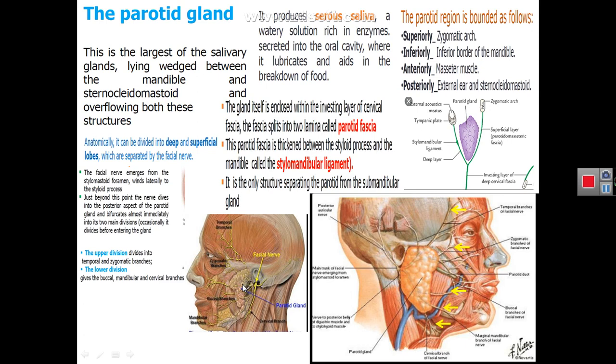Inside the substance of the parotid gland you have the facial nerve, which is the seventh cranial nerve. The facial nerve projects from the stylomastoid foramen — situated between the styloid process and the mastoid process. The facial nerve exits the stylomastoid foramen, then passes into the parotid gland from the back, perforating it and dividing into upper and lower divisions. Each division gives branches — five branches total — projecting from the anterior border of the parotid gland and supplying the muscles of the face.